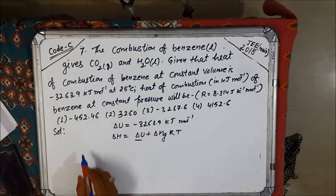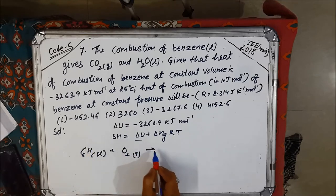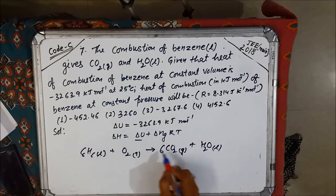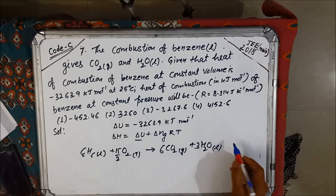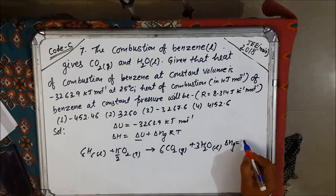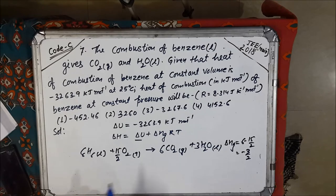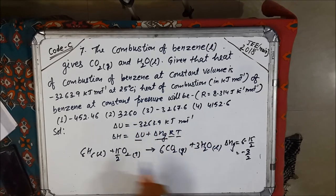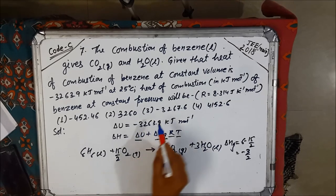The reaction is C₆H₆ (liquid) + O₂ (gas) → CO₂ (gas) + H₂O (liquid). Balancing gives 15/2 moles of O₂, producing 6 moles of CO₂. So Δng = 6 − 15/2 = −3/2. Since Δng is negative, ΔH is more negative than ΔU, meaning ΔH < −3263.9 kJ/mol.